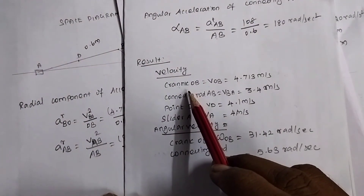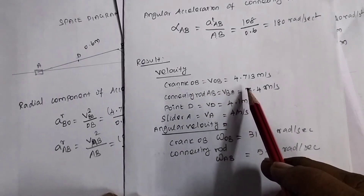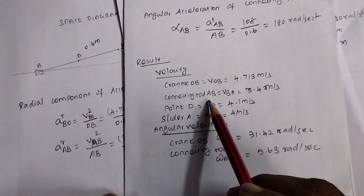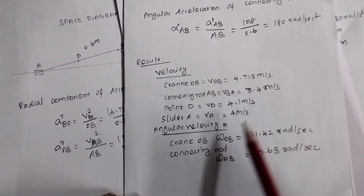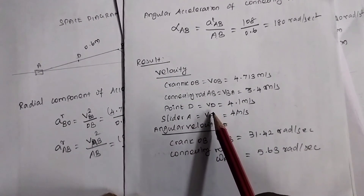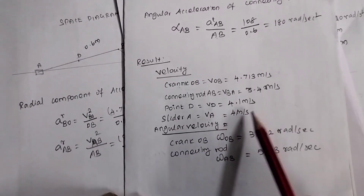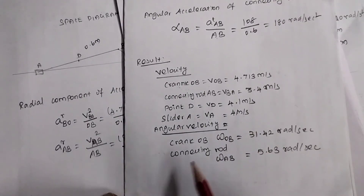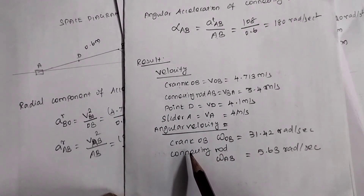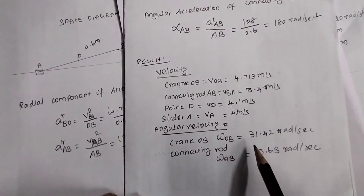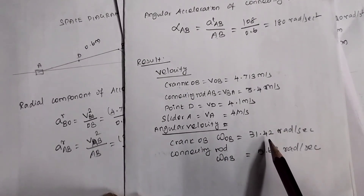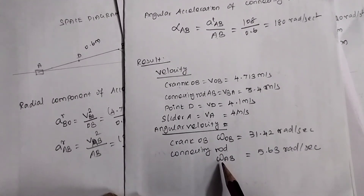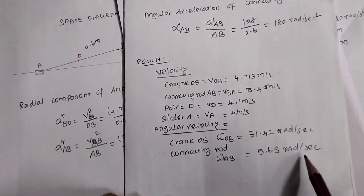Results summary — Velocities: velocity of crank OB (V_OB) = 4.713 m/s; velocity of connecting rod AB (VBA) = 3.4 m/s; velocity of point D (VD) = 4.1 m/s; velocity of slider VA = 4 m/s. Angular velocities: omega_OB = 31.42 rad/s; omega_AB = 5.63 rad/s.